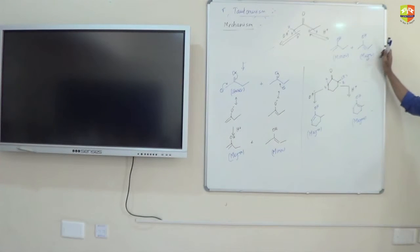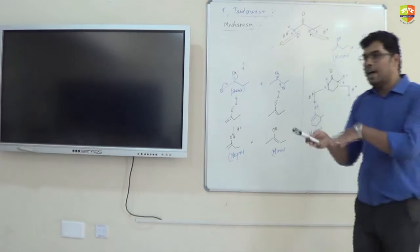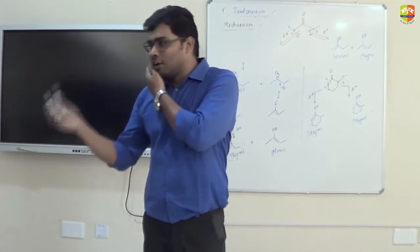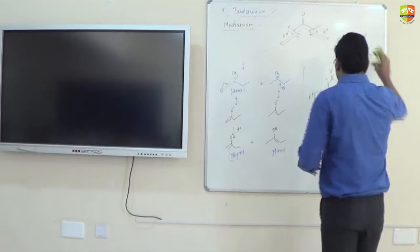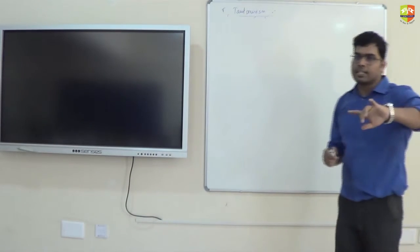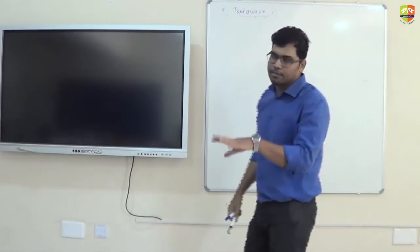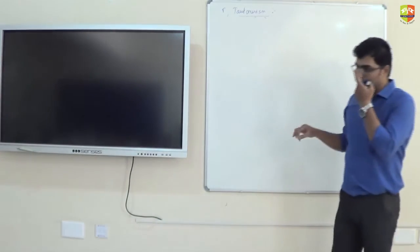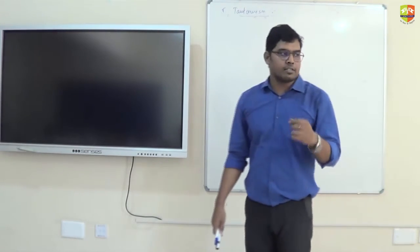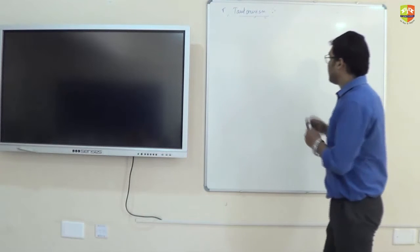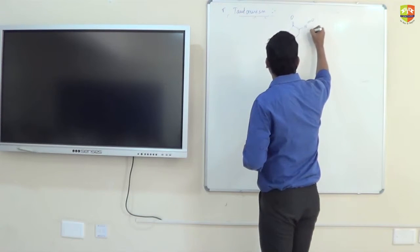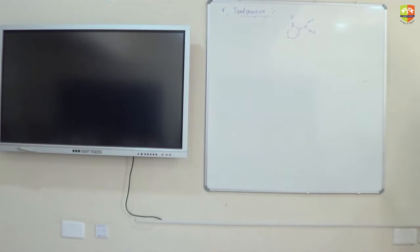But this is not always true - you cannot generalize that the major product in acidic is always minor in basic. I will give you one example to understand this. In basic medium, we check the stability of the carbanion; in acidic medium, we check the stability of the alkene. Now I am going to give the problem: what is the tautomeric product in this molecule with N double bond O, in both acidic and basic medium?